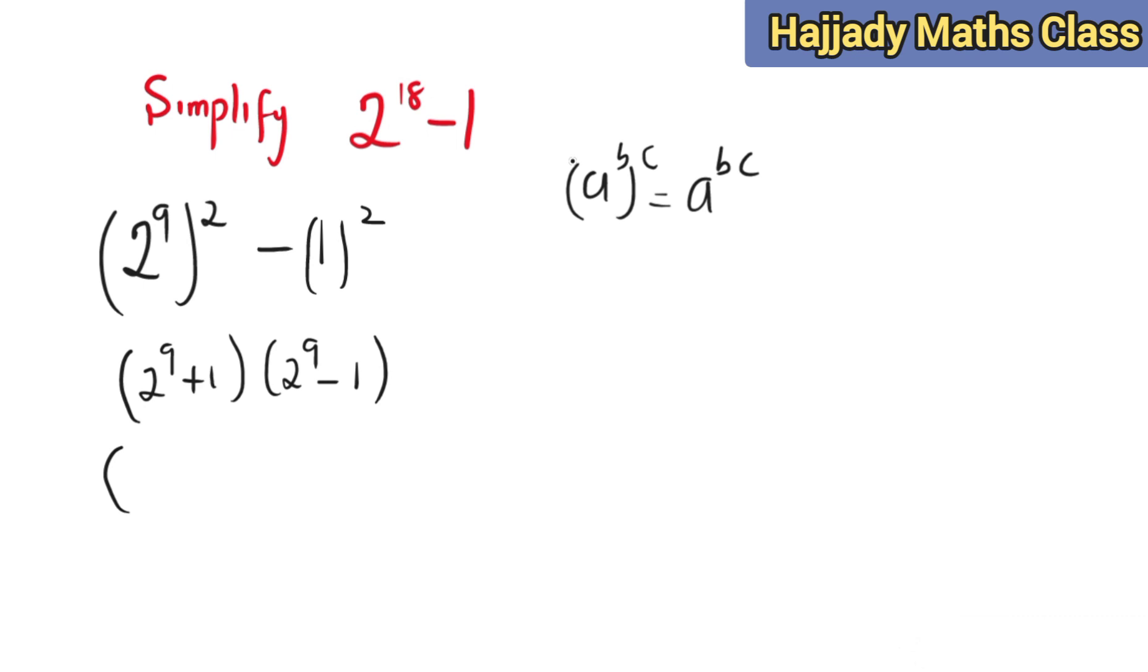So here we have 512 plus 1 and here we have 512 minus 1. So here we have 513 multiplied by 511.